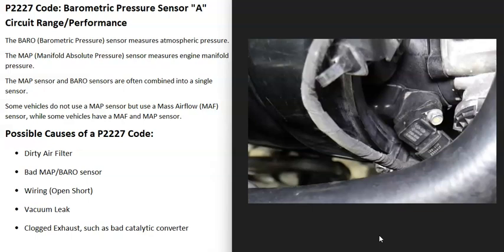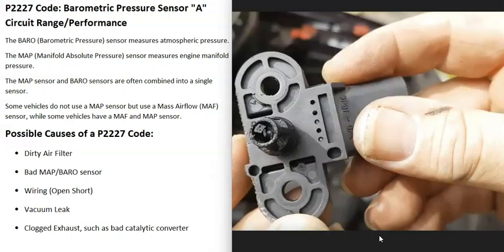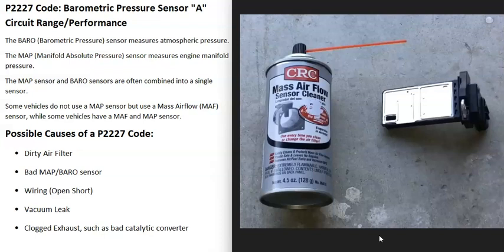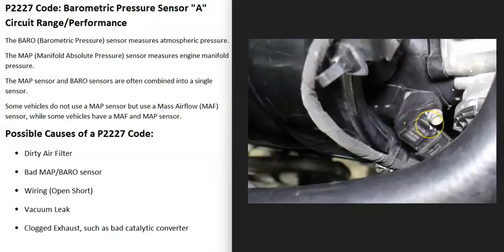The next possible cause is that the sensor has just gone bad and needs to be replaced. If you have a good OBD2 scan tool, there are ways to test these sensors. Sometimes the sensor just becomes really dirty and needs to be cleaned — you can use mass airflow sensor cleaner, take it off, spray it, clean it up, put it back on, clear the code, and see if the code comes back. Quite often that works, but it may also just need to be replaced.